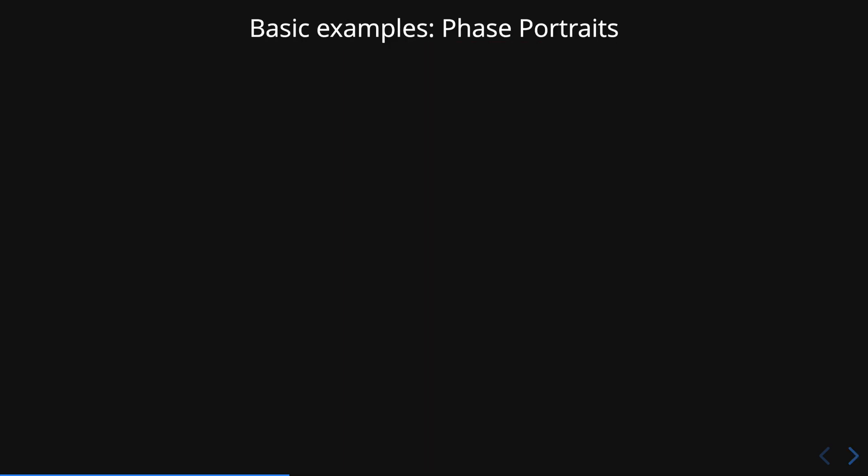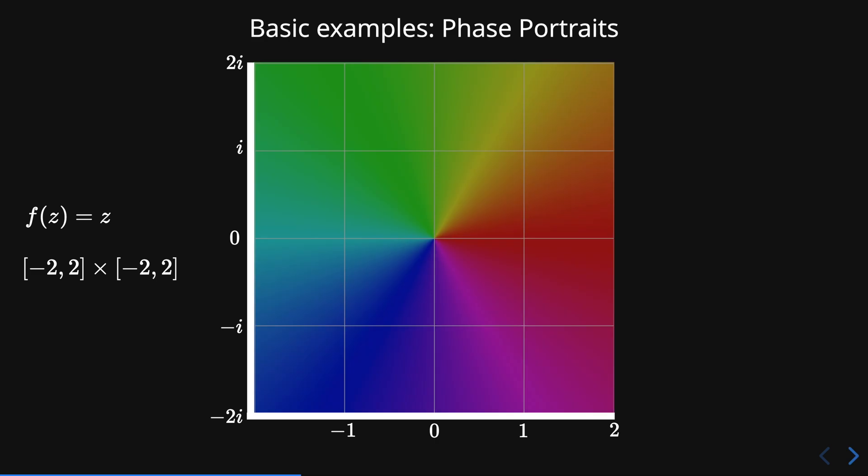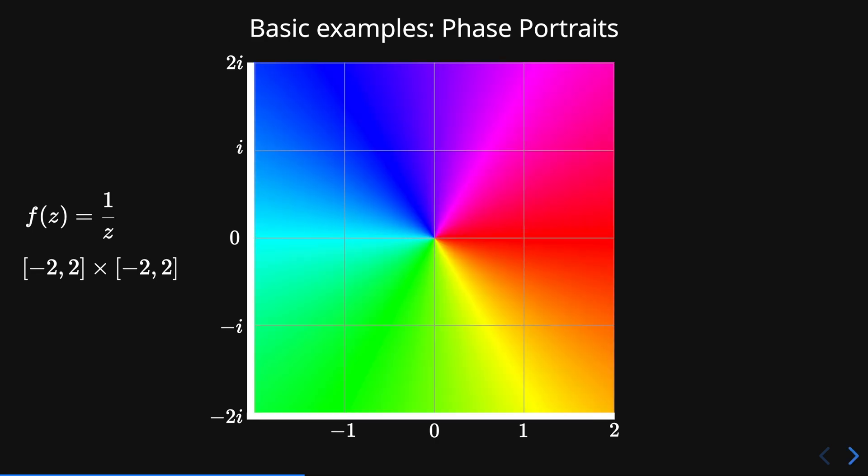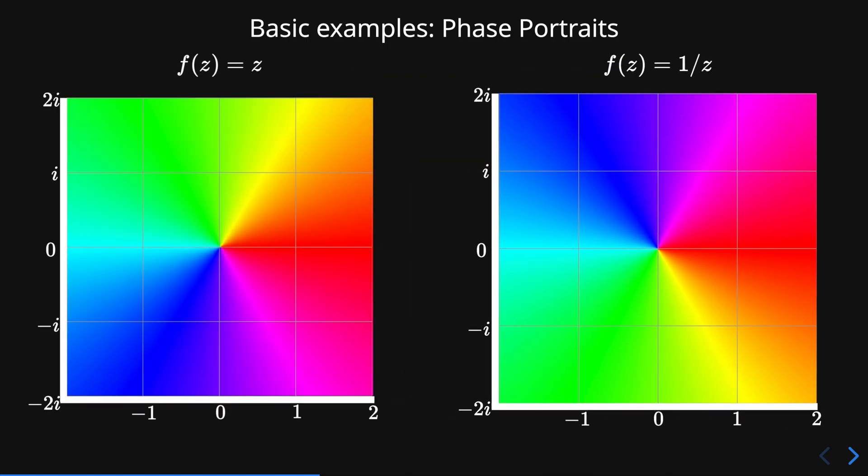Now let's take a look at some basic examples of phase portraits. Here we have again the identity function. Now this is the function 1 over z. Notice how the colors have been reflected with respect to the real axis, something that we can appreciate better here.